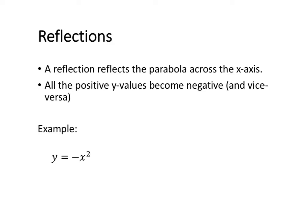Our example is y equals negative x squared. When it's negative x squared, that means we've reflected our original parabola across the x-axis.